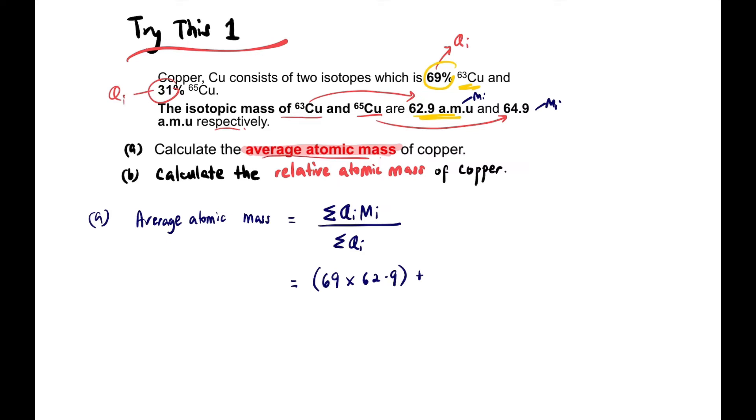Then the other one is 31% and its mass is 64.9, not 65—use what they gave. Divide by sum of qi which is 69 plus 31. Let your calculator do the job and you should get 63.52 AMU atomic mass unit. It has units because it's average.